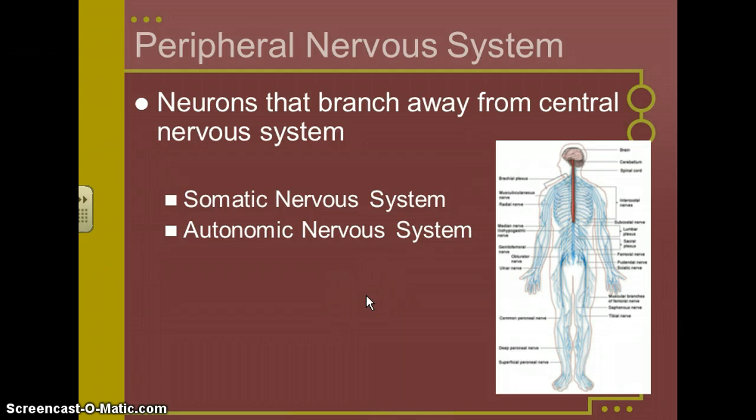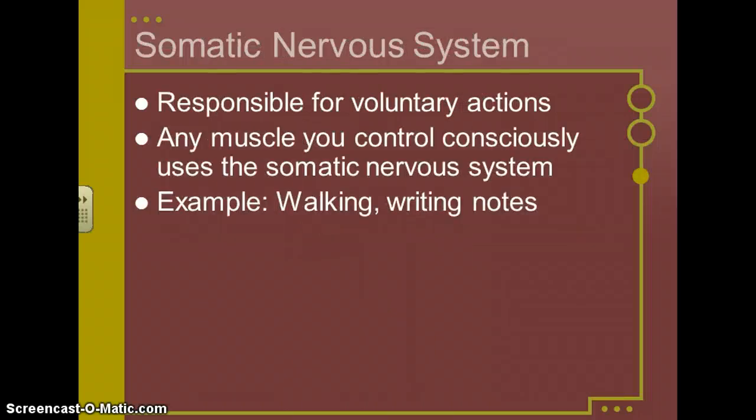We also then have two other branches, basically the somatic nervous system and the autonomic. Your somatic nervous system is responsible for voluntary actions. These are things that you choose to do voluntarily. So any muscle that you can control consciously is using the somatic nervous system. So examples of this are walking, talking, writing your notes.